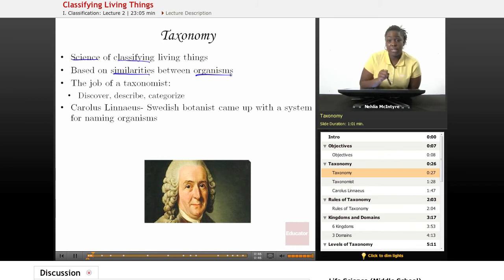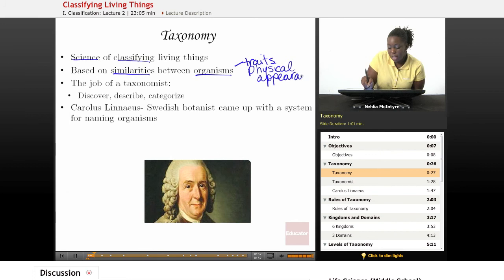That means their similarities could be based upon their traits, how they look physically, or their physical appearance. It could also be based on things like their evolutionary history—where did that organism come from? Do they have a common ancestor?